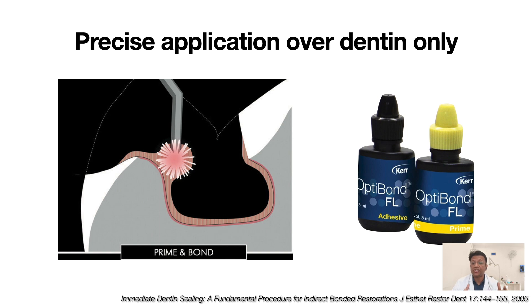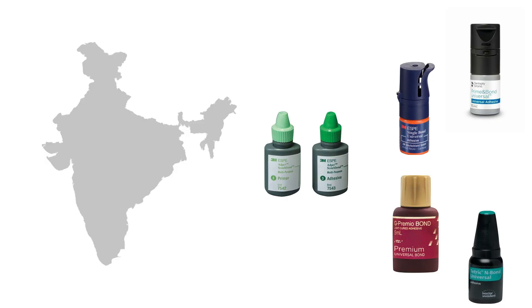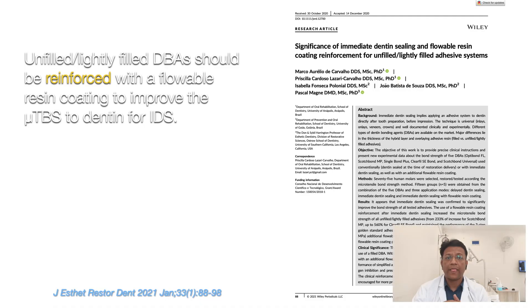In his classic article, Pascal Magne recommends that OptiBond FL — the filled bonding agent or filled adhesive from Kerr — has to be precisely applied on the dentinal tubules using a periodontal probe or any sharp instrument. As the name says, it is Immediate Dentine Sealing — not enamel sealing. We need to precisely apply the filled adhesive OptiBond FL on the dentine only. Since OptiBond FL is not available in India, during COVID times many webinar attendees asked what they should use instead.